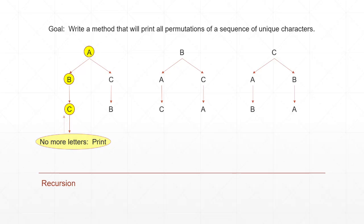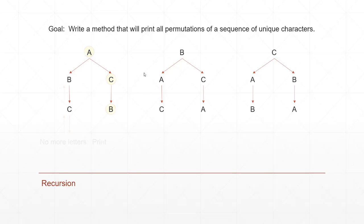Now that we've printed, we go back up our tree and ask: are there any other options besides C that I can pick coming from B? No, that's the only path, so we go back up. Now we ask: are there any other options besides B we could have chosen? Yes — we went from A to B, but we could have gone from A to C. So let's explore that path. After we pick C, we only have one choice, B. We print A, C, B. We traverse the tree exactly like that for all the other branches.